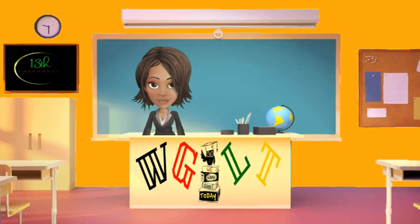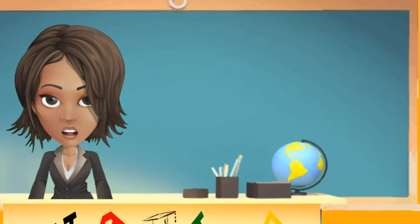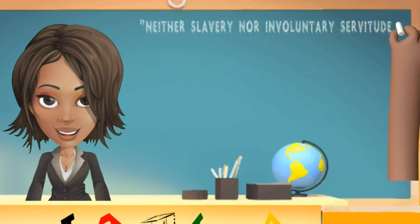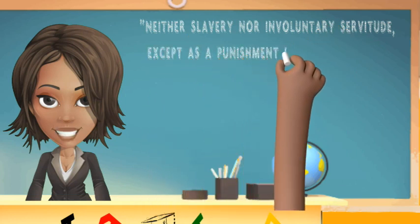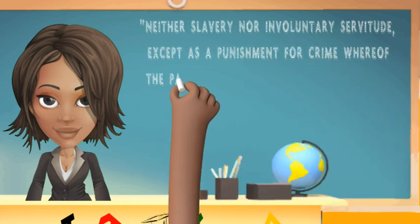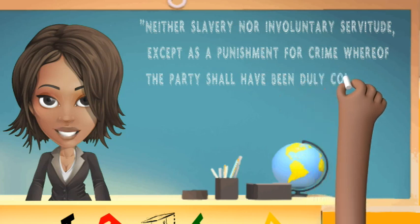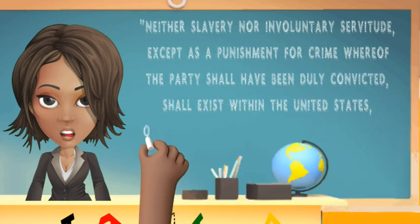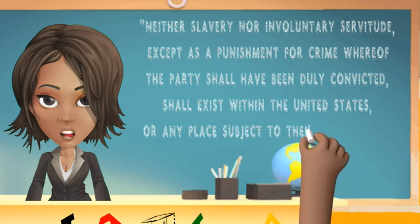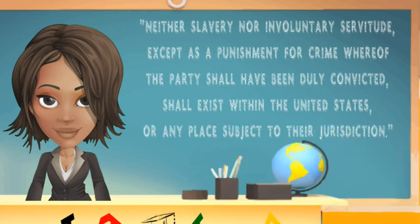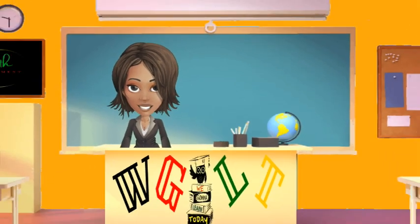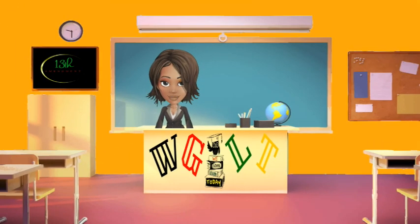The amendment addressed the issue of slavery and marked a significant turning point in American history. The 13th Amendment states: 'Neither slavery nor involuntary servitude, except as a punishment for crime whereof the party shall have been duly convicted, shall exist within the United States or any place subject to their jurisdiction.'